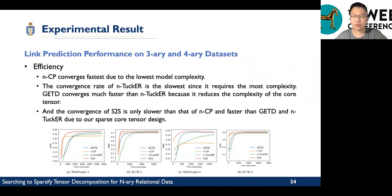Now, about training efficiency, we can find that NCP converges faster due to the lowest model complexity, but its performance is not pretty good. And the convergence rate of N-Tucker is slowest since it requires the most complexity. And GETD converges much faster than N-Tucker because it reduces the complexity of the core tensor. And the convergence of S2S is only slower than that of NCP and faster than GETD and N-Tucker due to our sparse core tensor design.